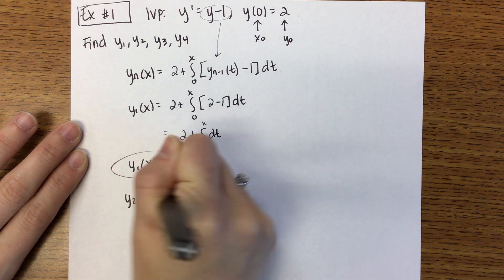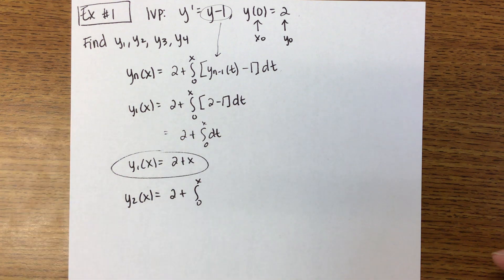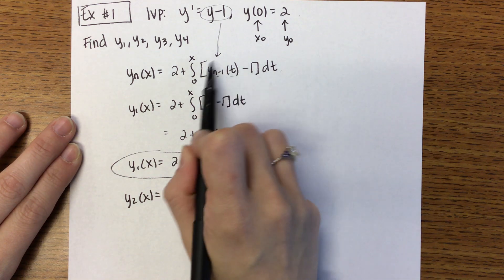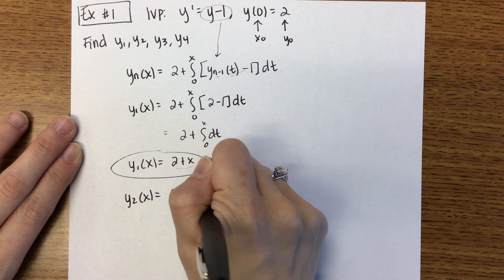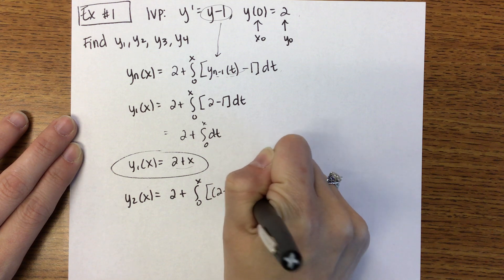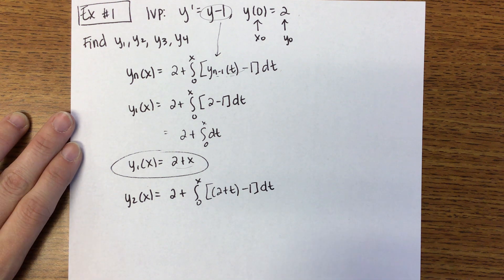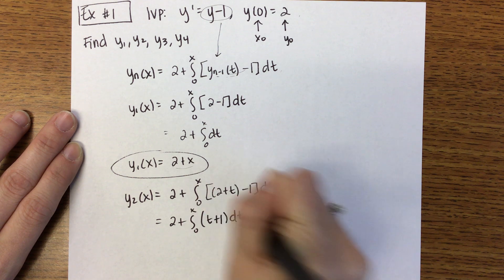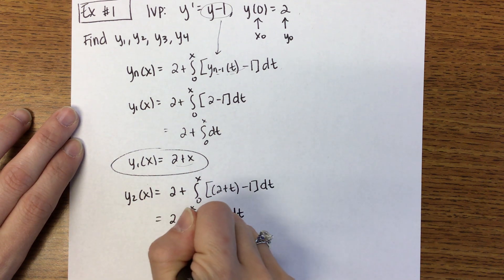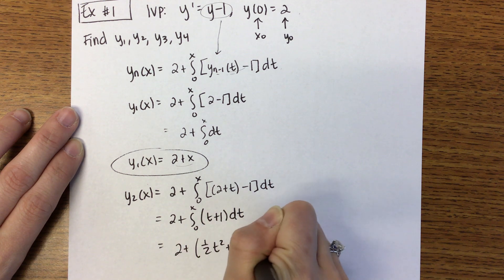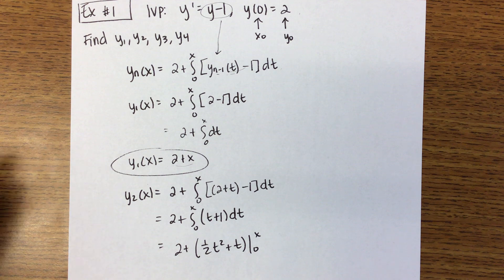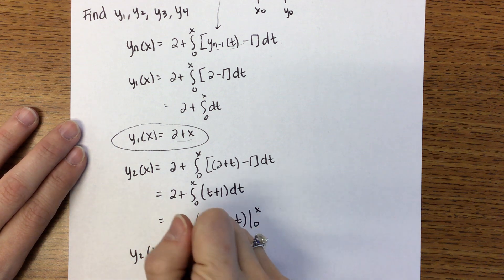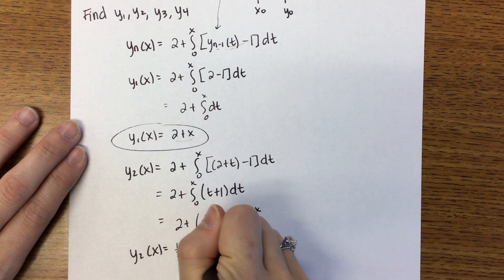So then Y2 of X, it's still that 2 plus integral from 0 to X. Y of N minus 1 of T minus 1. This comes from the previous approximation. So you take that 2 plus T and then subtract 1. So you're just using the previous one. So here we get 2 plus 1 DT. This will be 2 plus 1 half T squared plus T from 0 to X. So our Y2 of X then, putting it in order, is going to be 1 half X squared plus X plus 2.